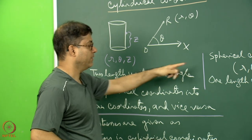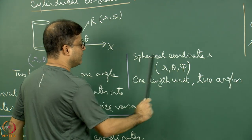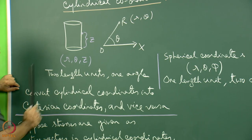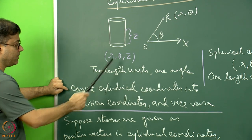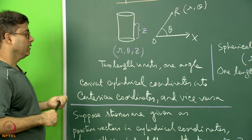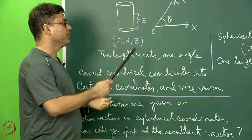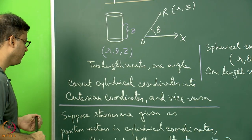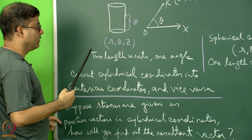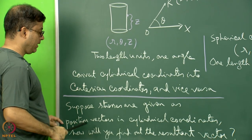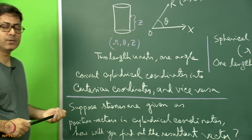Students are asked to find the conversion formula from cylindrical (R, θ, Z) to Cartesian (X, Y, Z). Note that the Z value is unchanged, while R and θ convert to X and Y just as in 2D polar coordinates. Also, given stresses σ1 with position vector (R1, θ1, Z1) and σ2 with (R2, θ2, Z2), find the resultant, and also derive the inverse conversion from Cartesian to cylindrical.